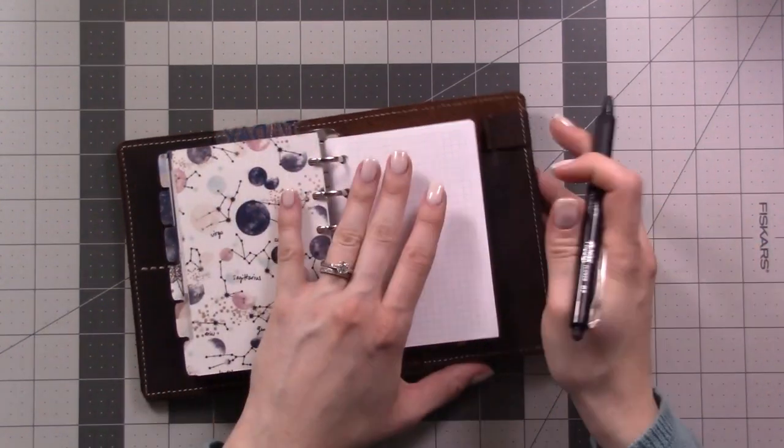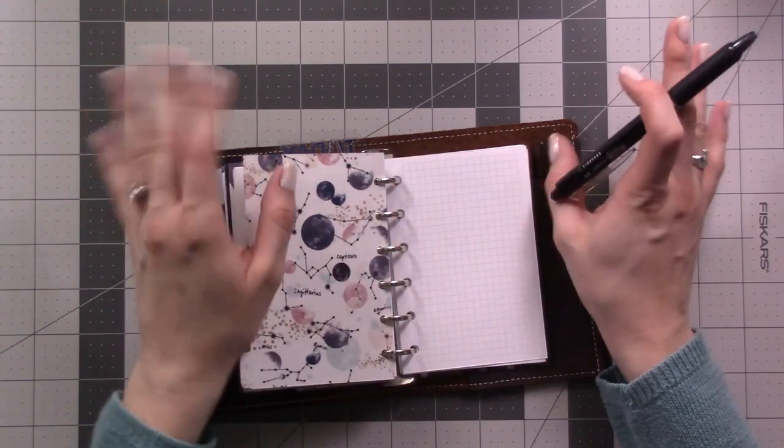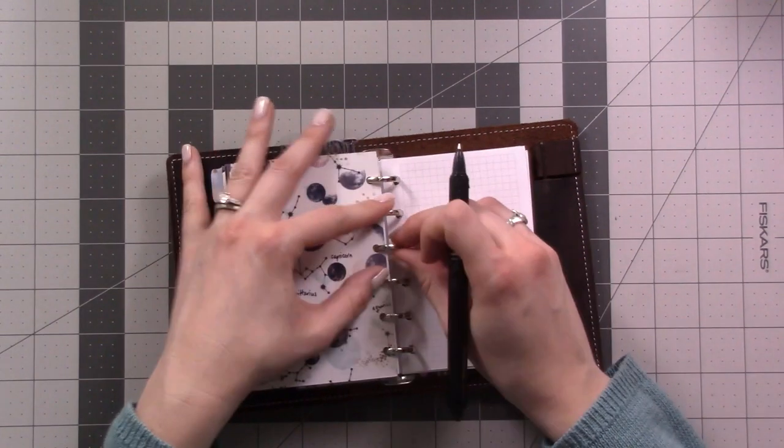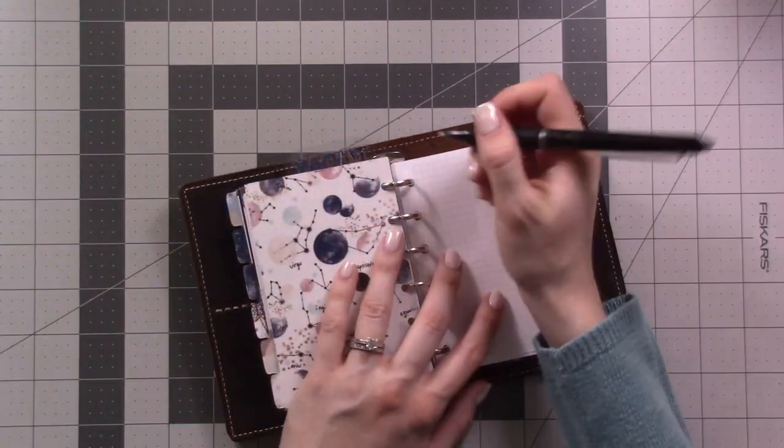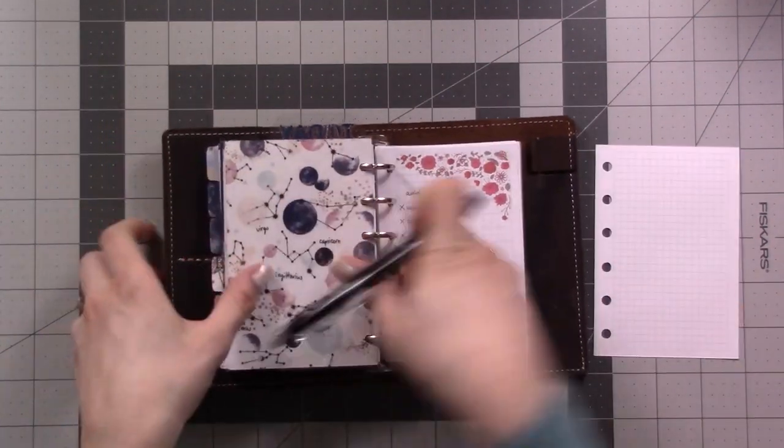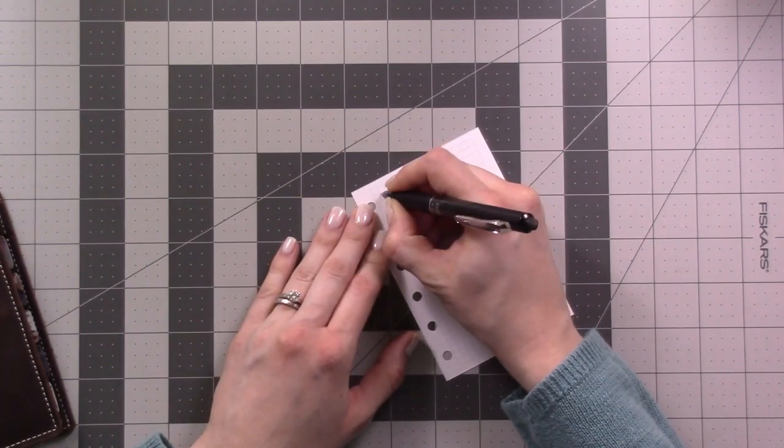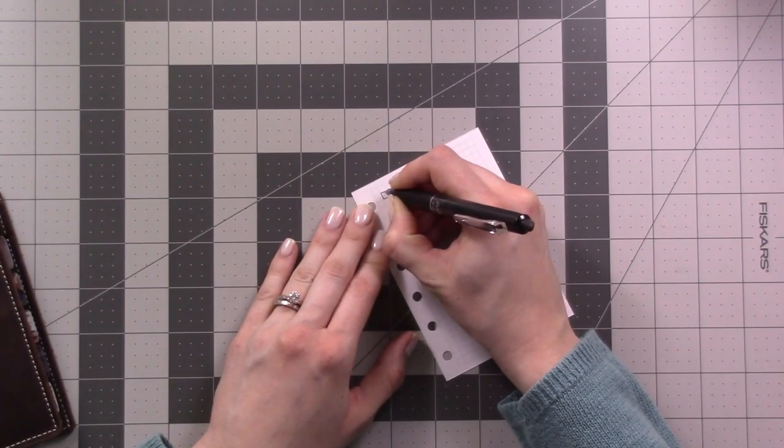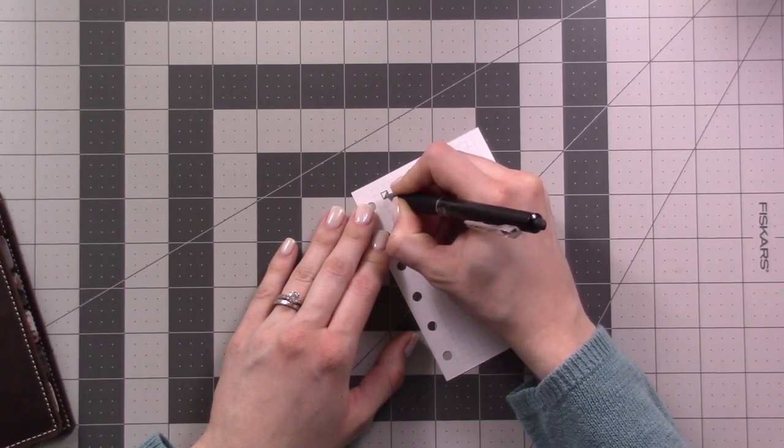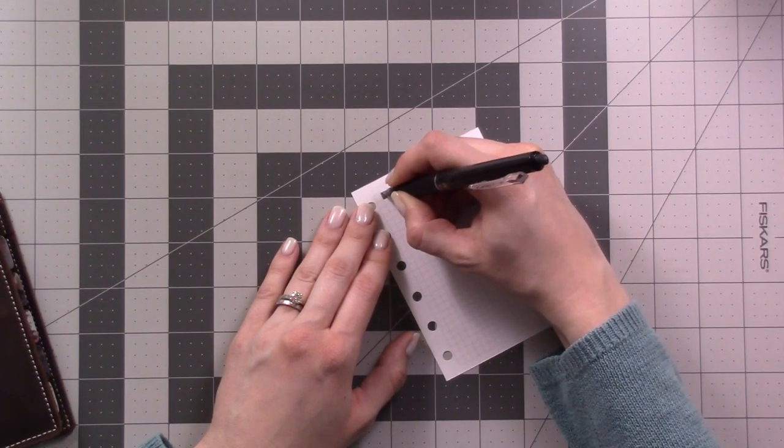Ryder Carroll's original bullet journal explanation video. He explains the whole system including what the different bullets do. There are actually two different versions of that video. In the original one, he uses a box for a task and then he'll fill it in halfway when it is halfway completed and then all the way when it's completely done.